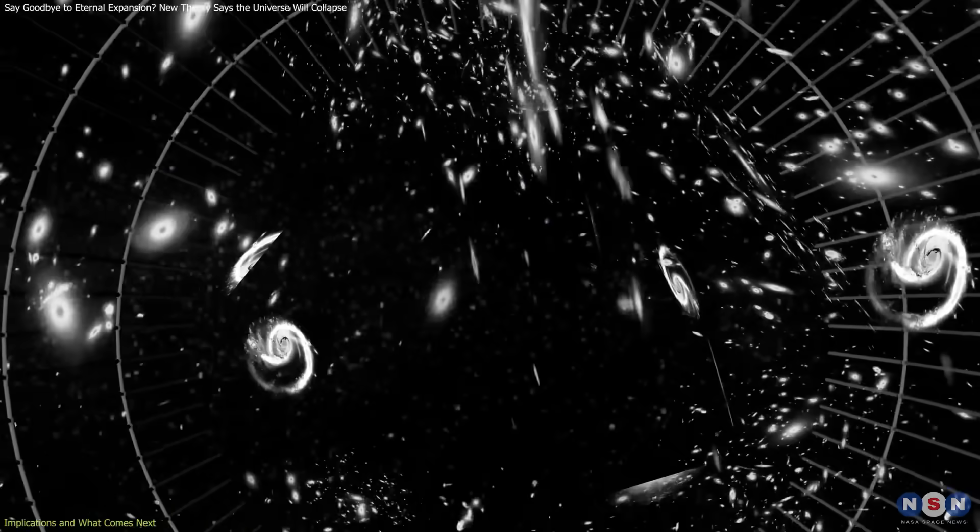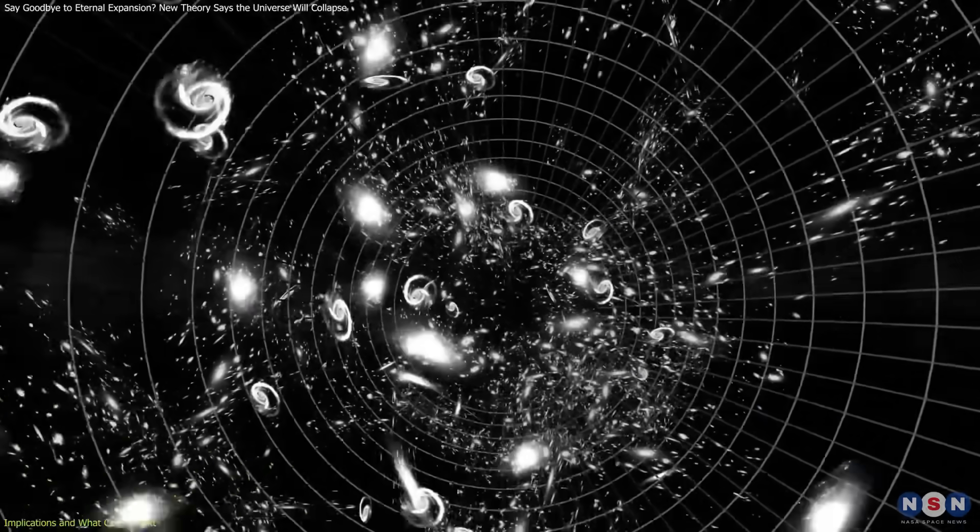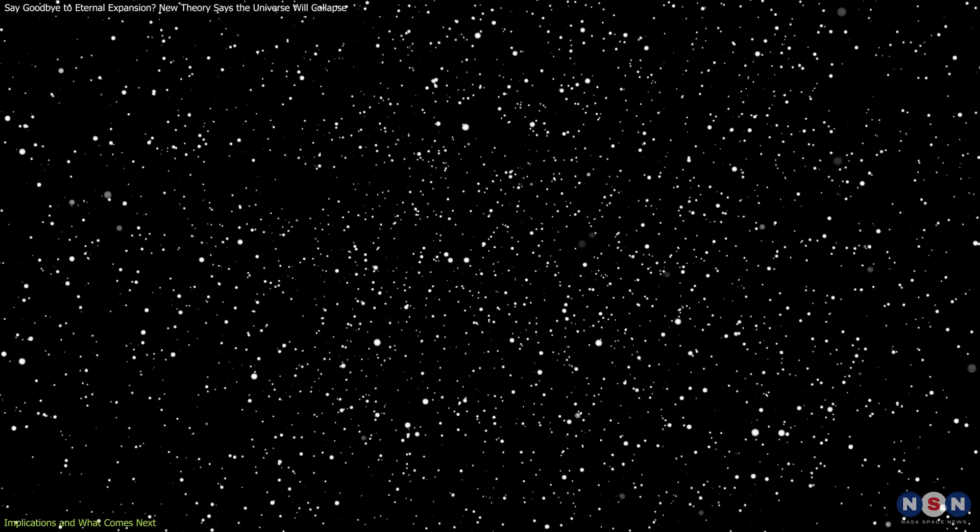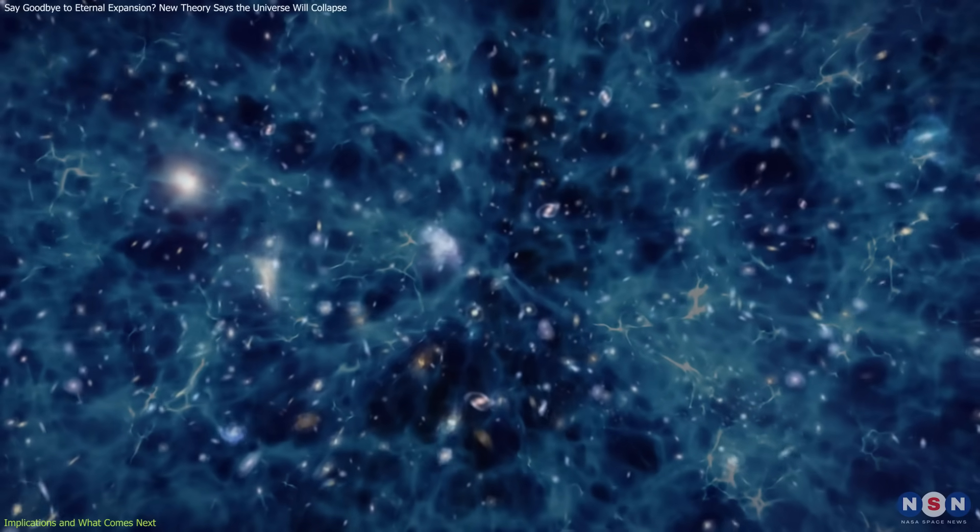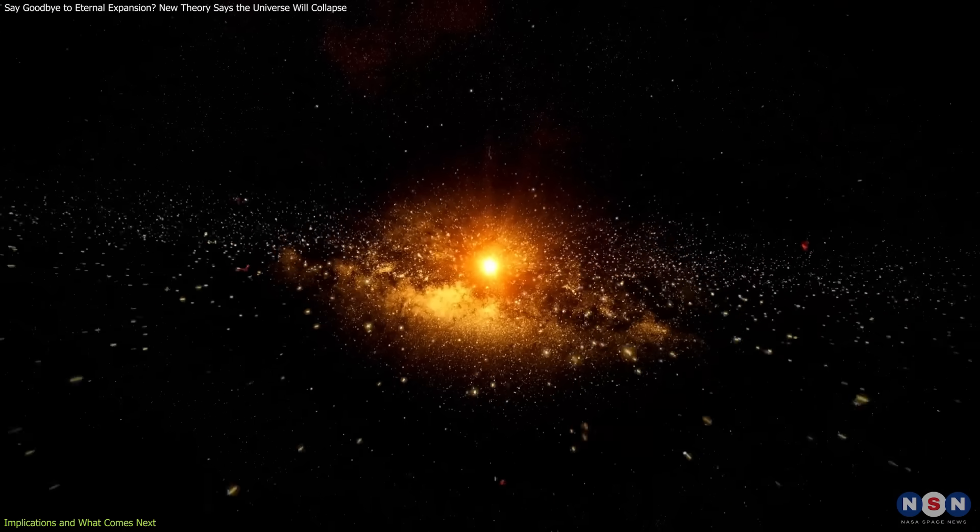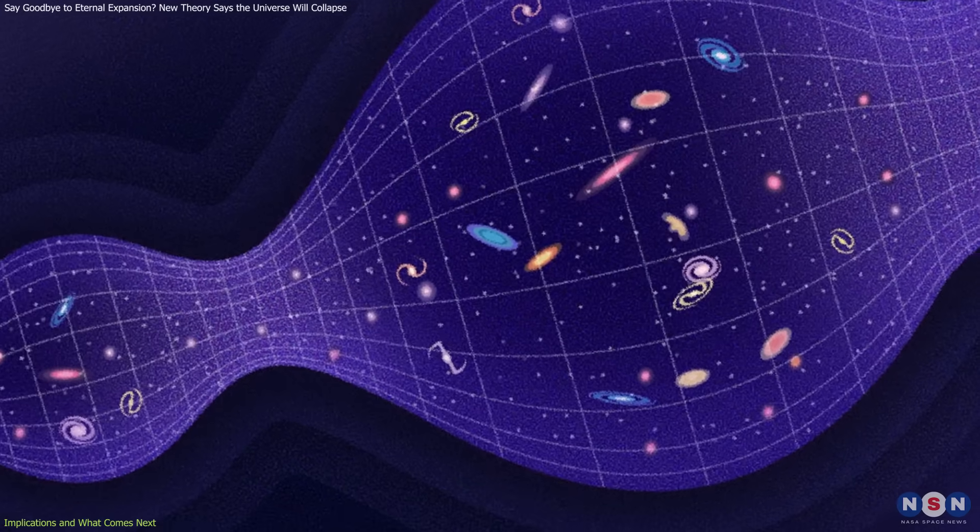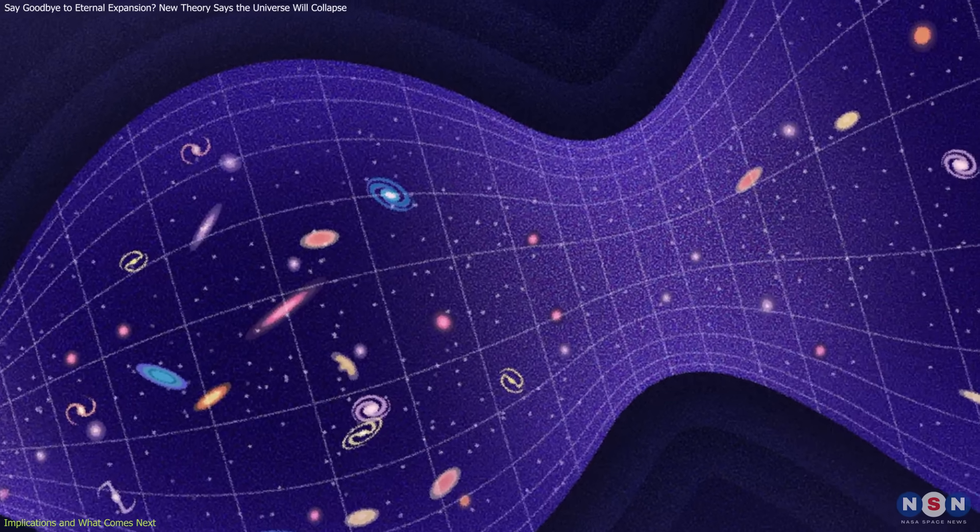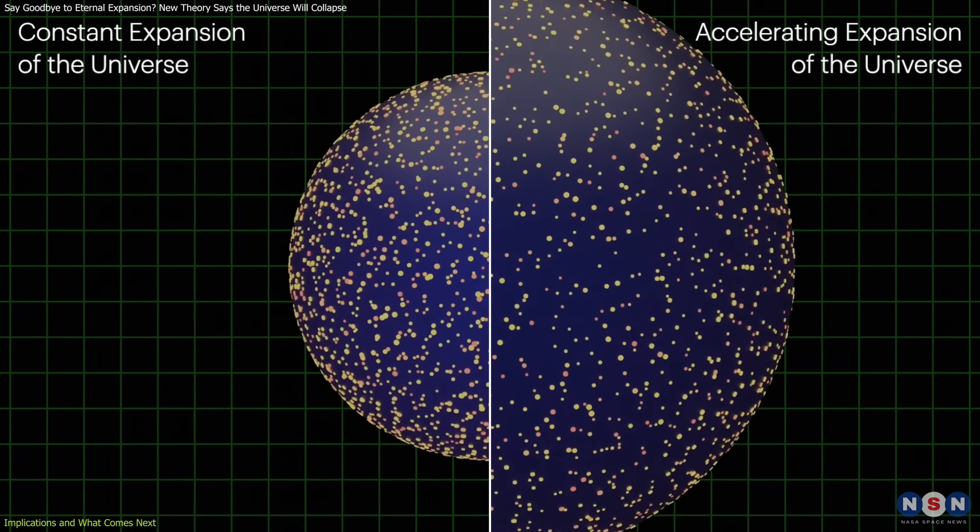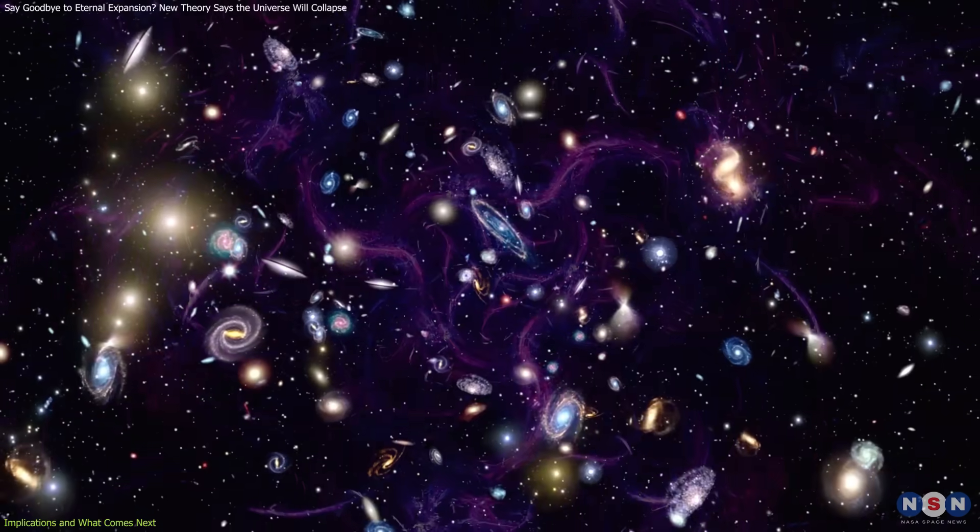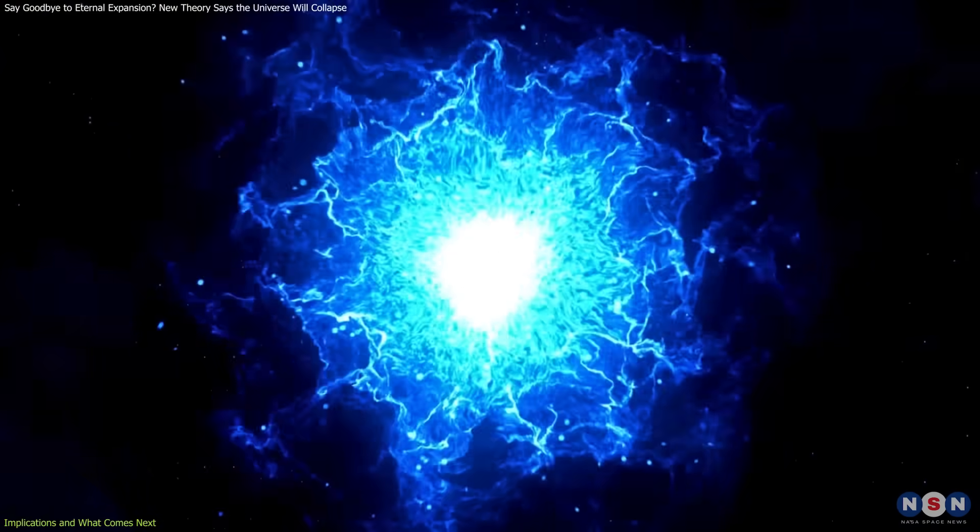The dominant view today is the big freeze—expansion continues forever, galaxies move farther apart, stars burn out, and the universe fades into darkness. But if dark energy isn't stable, that future changes entirely. Instead of cooling into stillness, the universe could collapse in heat and compression. That revives the concept of a cyclic universe, where expansion leads to contraction, which may lead to another big bang. It's a concept that was once popular, but fell out of favor after the discovery of accelerating expansion. This model doesn't claim that cycles are guaranteed, only that collapse is again a possibility, based on the physics of evolving dark energy and a negative cosmological constant.